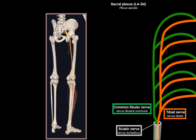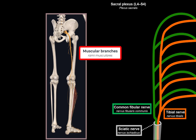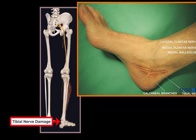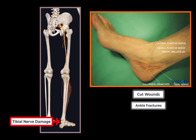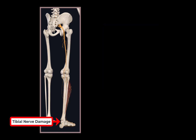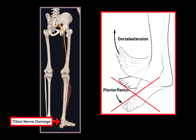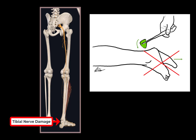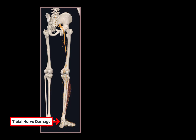The sciatic nerve also has muscular branches innervating the posterior thigh — the biceps femoris, semitendinosus, semimembranosus, and part of the adductor magnus — and articular branches providing partial somatosensory innervation of the hip joint. Damage to the tibial nerve, usually in the malleolar canal from cut wounds, ankle fractures, or incorrectly applied plasters, results in impaired plantar flexion, inability to stand on tiptoes, absent ankle jerk reflex, and a condition called club foot or pes calcaneus.